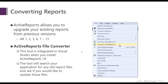Active Reports allows you to upgrade your existing reports from previous versions — specifically versions 1, 2, 3, 6, and versions 7 through 13. This is done using the Active Reports File Converter, which is integrated in Visual Studio when you install Active Reports 14, regardless of whether you have the standard or professional edition. This tool will also search your application for any old report files and ask if you'd like to update them.